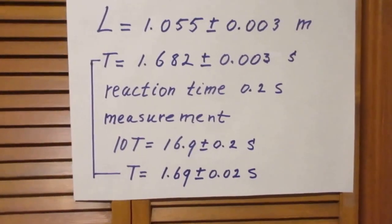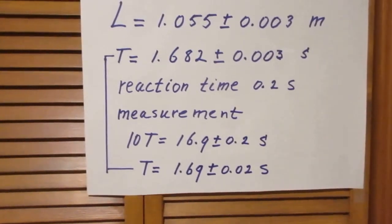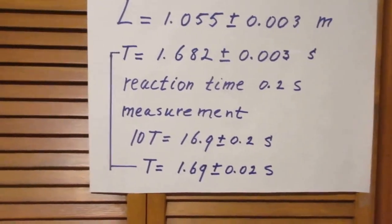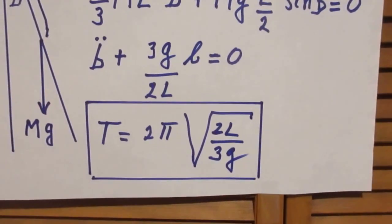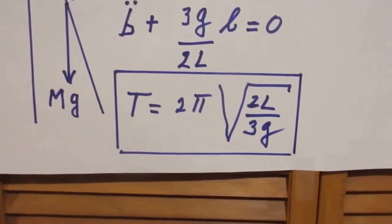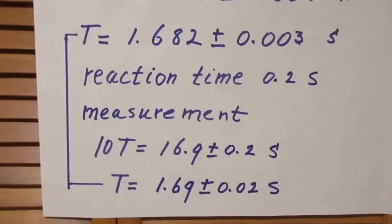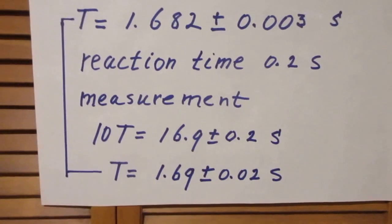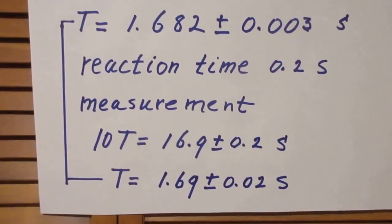So I substitute L in this equation and I use for G 9.81. And then I find that the period that I predict is 1.682 plus or minus 0.003 seconds.